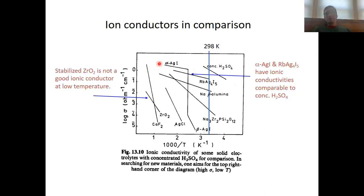Looking at this curve, for alpha silver iodide you have very high ionic conductivities, whereas for the other phase, beta silver iodide, which has a different crystal structure, we have an ionic conductivity which is several orders of magnitude lower.